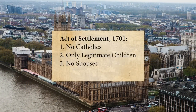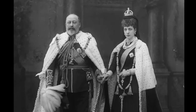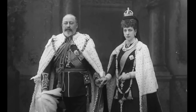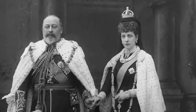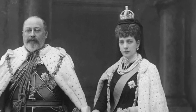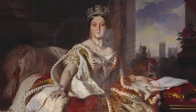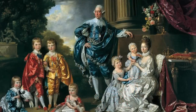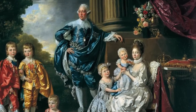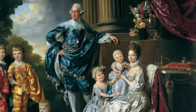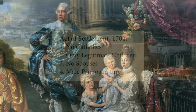Rule number three: spouses are not included in the succession. We may call the wife of a king the queen, but really she is the queen consort, which is different than a queen in her own right, such as Queen Elizabeth I, Queen Victoria, or Queen Elizabeth II. The monarch's spouse is simply not a part of the line of succession, and they cannot take over the throne if their spouse dies.